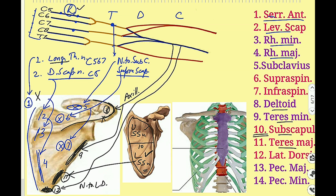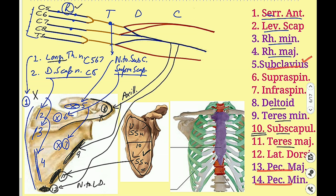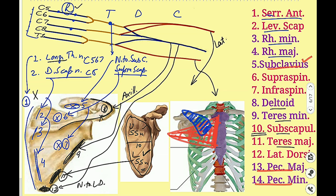Now, the muscles of the pectoral region: pectoralis major and pectoralis minor. From the lateral cord we get the lateral pectoral nerve, and from the medial cord we get the medial pectoral nerve. Pectoralis major is a large muscle innervated by both the medial and lateral pectoral nerves. Pectoralis minor is supplied only by the medial pectoral nerve. So the medial pectoral nerve supplies both, while the lateral pectoral nerve supplies only pectoralis major.